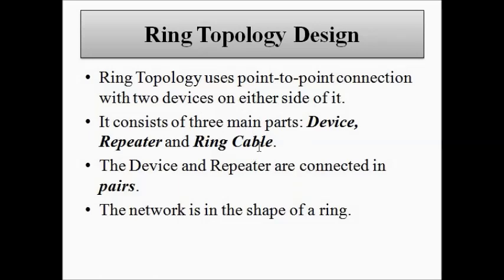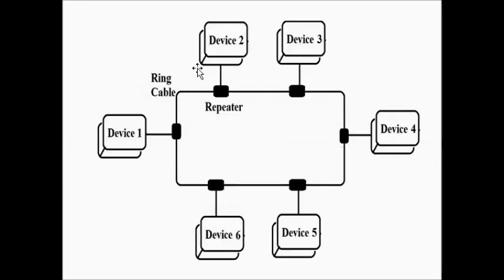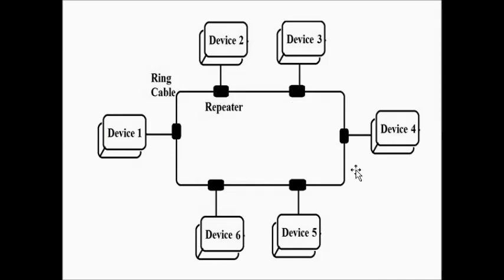So it consists of three main parts. The device and the repeater are connected in pairs, meaning each device or node has a repeater joined with it. The ring topology looks something like this — this is the ring-shaped cable, the main channel, and these are the devices. Here there are six devices connected to the ring cable, and the black rectangular elements are the repeaters.